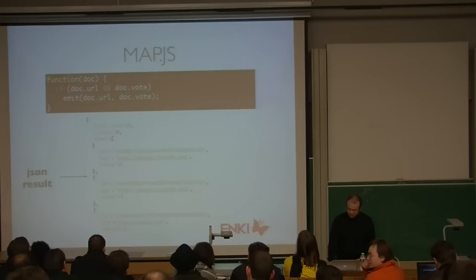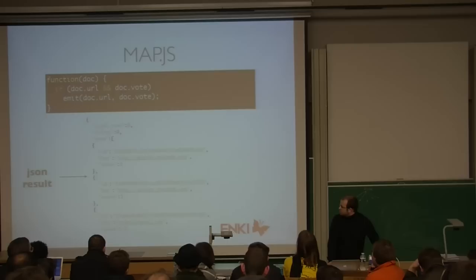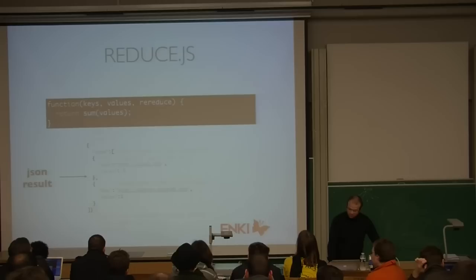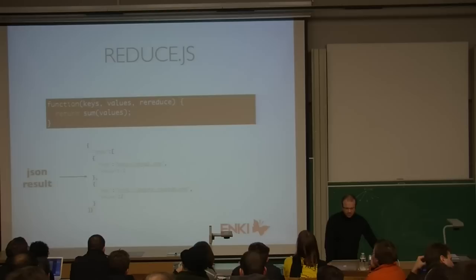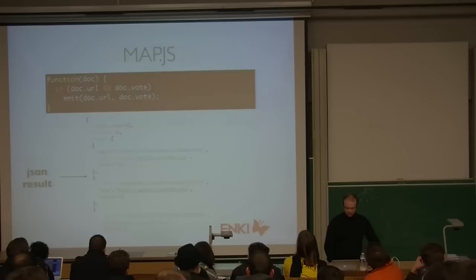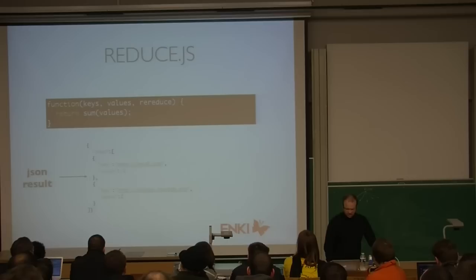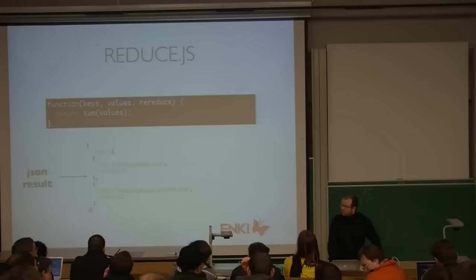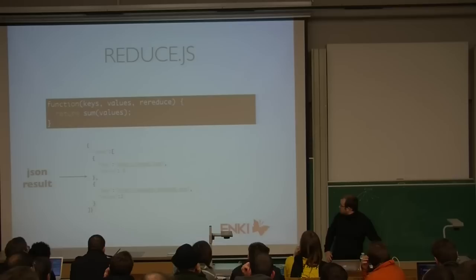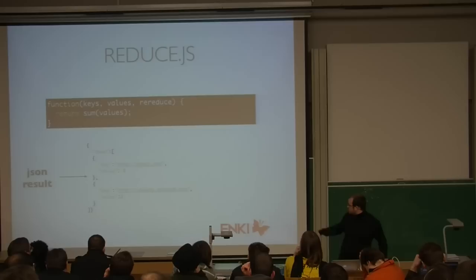Now we want to reduce them. To get the top URLs, we want to calculate which value is attributed to each URL. Reduce is also a JavaScript function where CouchDB passes the keys we retrieved before and their values — two lists where each index is associated: key zero is the same as value zero. We just sum all the values per key. And then it reduces the previous list to a list of two keys: MySQL with minus one vote, and CouchDB with value two.